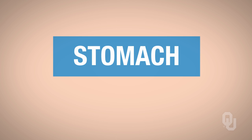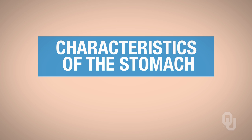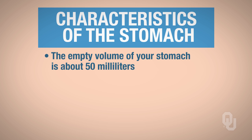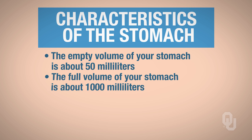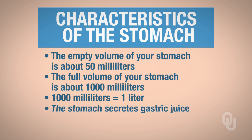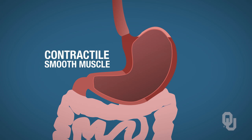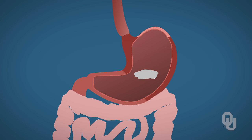Now we move into the stomach. The empty volume of your stomach is about 50 mL, and the full volume is about 1,000 mL, which is the same as 1 liter. The stomach secretes gastric juice. You also have contractile smooth muscle that lines the wall of your stomach, which helps pulverize and break down food particles, then mixes them with the juice to form a mixture called chyme — so it no longer completely resembles the food you ingested.